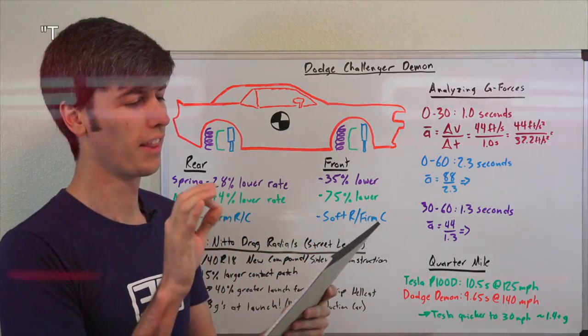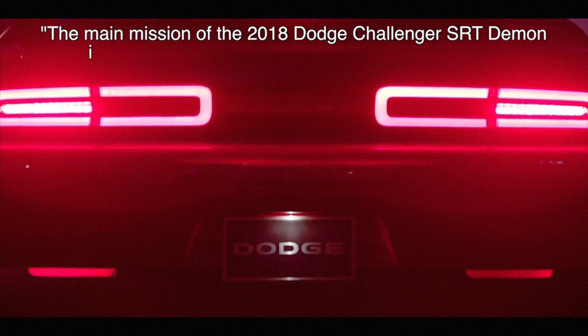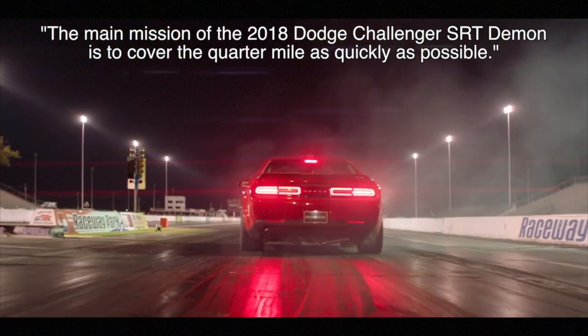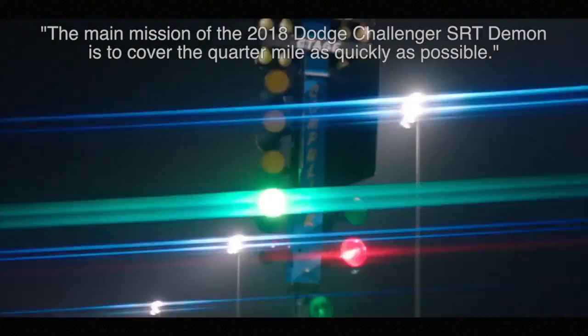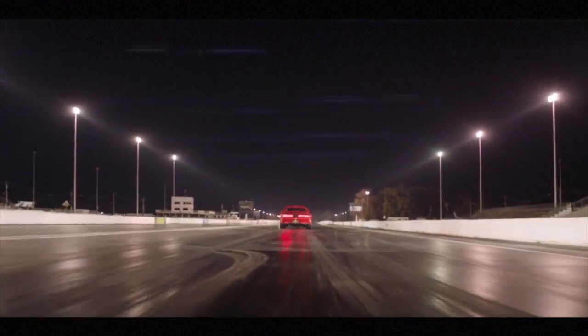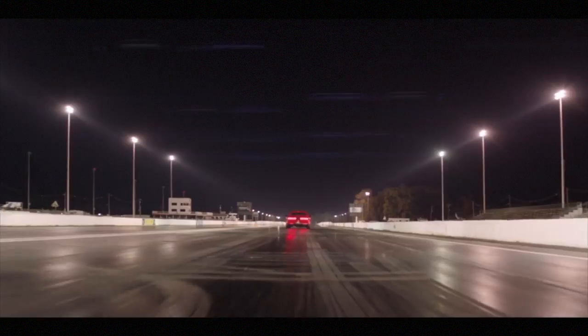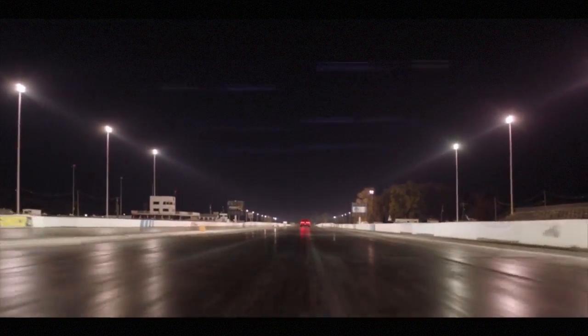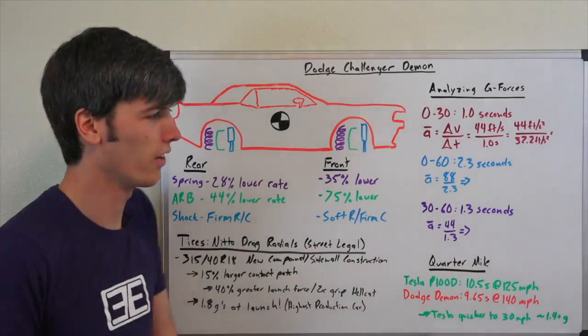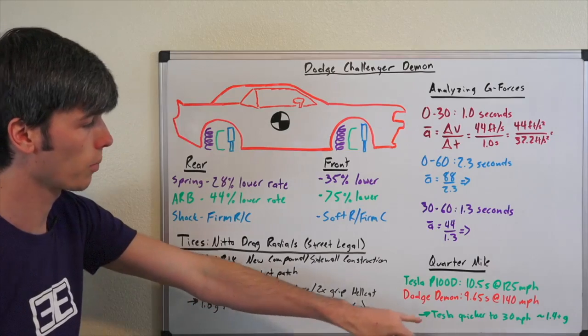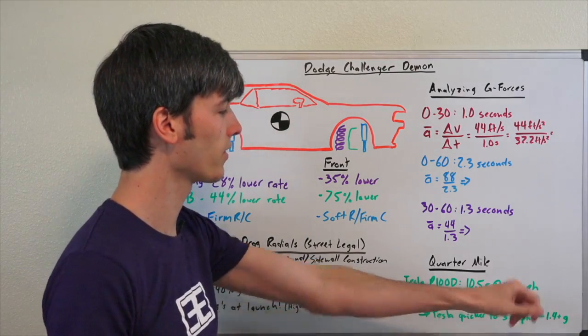The main mission of the 2018 Dodge Challenger SRT Demon is to cover the quarter mile as quickly as possible. From a design standpoint, this vehicle was designed to be the fastest production car across the quarter mile. It hit a quarter mile time of 9.65 seconds at 140 miles per hour.